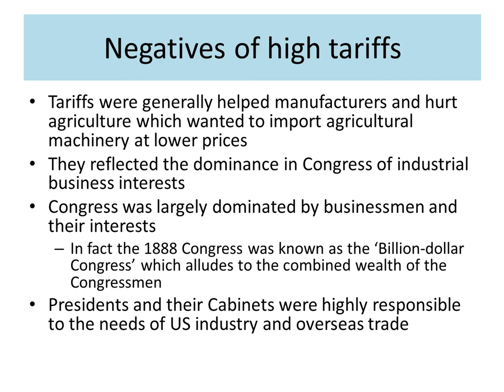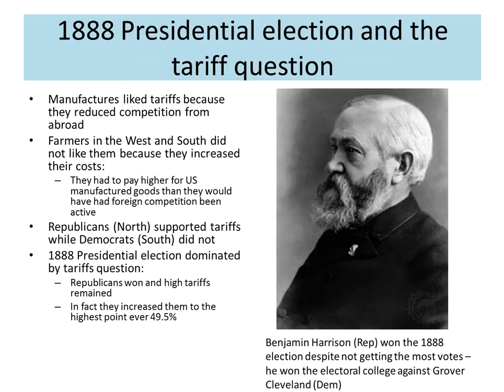Presidents and their candidates are highly responsive to the needs of industry, but much less so to the needs of agriculture. They are also very responsive to overseas trade — trying to get American goods overseas — but agriculture, not so much. The classic example of the tension between rural and industrial America was the 1888 presidential election. Manufacturers love tariffs because it means less competition from abroad and more profits. Farmers in the South and West hate it because their farming implements and fertilizers cost much more, since you have to buy from American factories that can charge what they want.